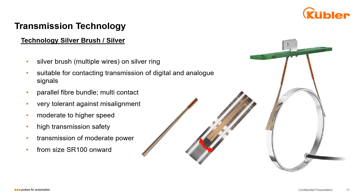Here we see another version of silver-silver technology, which is more used in bigger slip rings. The brush is made of a bundle of single silver wires spreading out when touching the silver-coated ring. With this technology we instantly receive multiple contact points and secure a very stable and robust contact. The contact pressure is minimized and therefore we achieve a big lifespan. In many cases the slip ring competes with the lifetime of the machine, and the produced wear debris can be neglected.